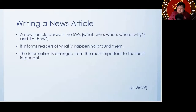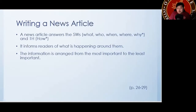You might see that there is an asterisk for the 'why' and the 'how.' The reason why there are asterisks is because these are not always answered by news articles. Usually in a lot of news articles you would have what, who, when, and where. Why isn't always answered, and how is also not always answered — especially for certain news, not all the time can people identify the why and the how immediately.